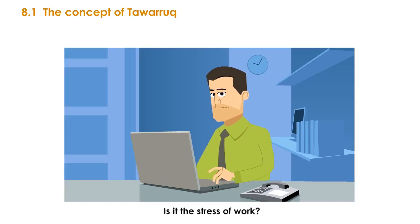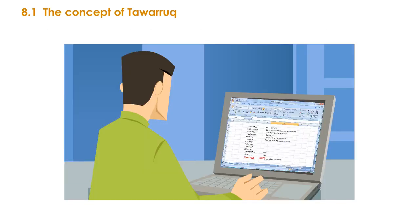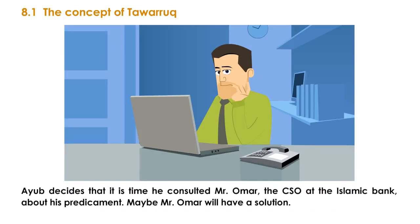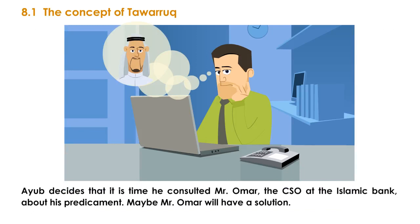Is it the stress of work? Looks like Ayub is in trouble. His projected expenses for the wedding are way above his savings by 63,000 dirhams. Ayub decides that it is time he consulted Mr. Omar, the CSO of the Islamic bank, about his predicament. Maybe Mr. Omar will have a solution.